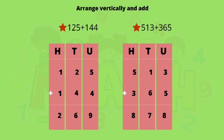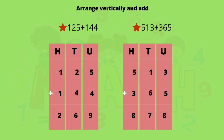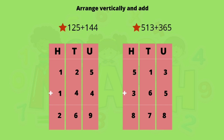Next sum: 513 plus 365. Arrange vertically — hundreds: 5, tens: 1, units: 3; plus hundreds: 3, tens: 6, units: 5. Now add: three plus five is eight; one plus six is seven; five plus three is eight. So the answer is eight hundred and seventy-eight.